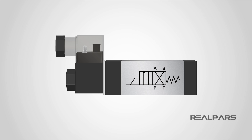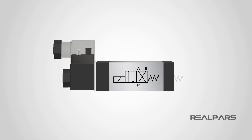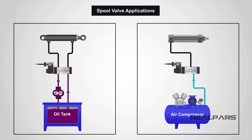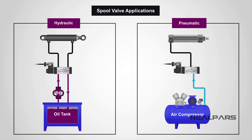Spool valves are found in almost every industry you can imagine, performing a wide range of tasks. Spool valves can be used in both hydraulics, where oil is the energy source, or pneumatics, where air is the energy source, and their job is to control the flow direction of the energy source by combining or switching the paths through which the oil or air can travel.